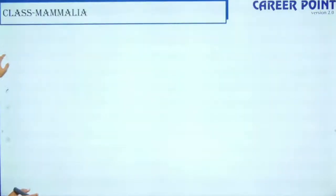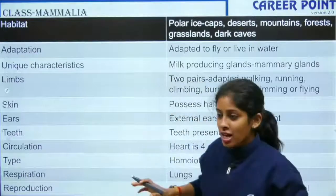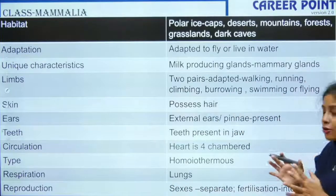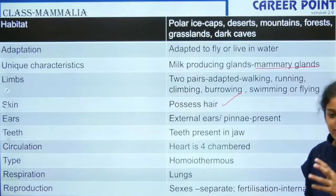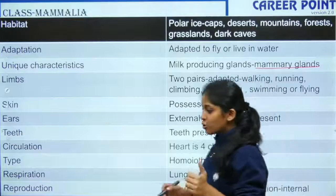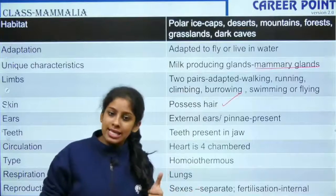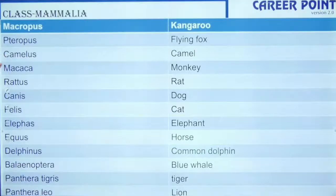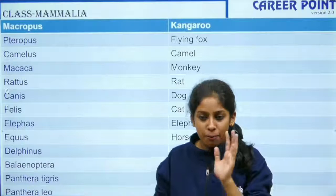The last class is Mammalia. Mammals are present everywhere — they fly (like bats) and live in oceans (like dolphins). The most unique features are the milk-producing mammary gland and the possession of body hair — these are the two distinct characteristics. Examples are equally important. This chapter has high weightage, so you must remember the examples.